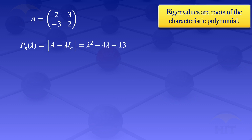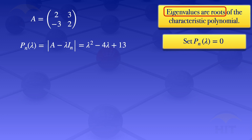Earlier we said eigenvalues are roots of the characteristic polynomial. To get those roots we set P_n of lambda equal to zero and solve for lambda, giving us λ² − 4λ + 13 = 0. We try to find factors — two numbers which multiply to give 13 and add to give −4 — but in this case we can't find any.